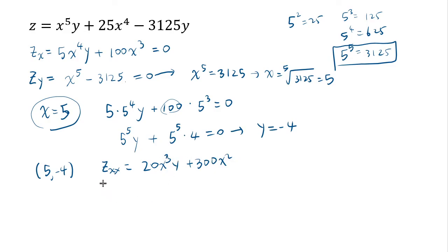On the other hand, zyy would be differentiating the second one by y. Well, I don't see any y at all, so it's going to be just 0. And zyx, which is the same thing as zxy. I guess it's easier to differentiate this by x. If I differentiate this by x, I get 5x to the 4th and then this differentiates to 0.